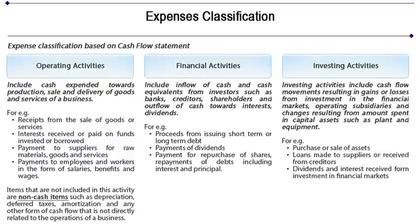Investing activities include cash flow movements resulting in gains or losses from investment in the financial market, operating subsidiaries, and changes resulting from amounts spent on capital assets such as plant and equipment. For example, purchase or sale of assets, loans made to suppliers or received from creditors, and dividends and interest received from investment in financial markets are all investing activities.